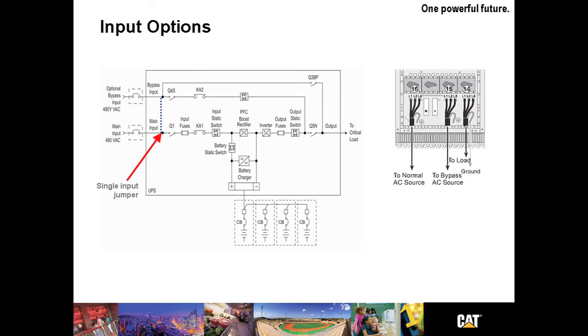There are two input options in the UPSB-130. The drawing on the left shows a one line of a dual input system with a single input configuration depicted by the use of the blue dashed line. The image to the right shows the input connections of a dual input system.